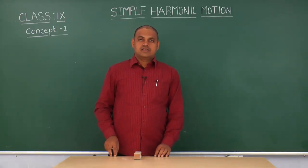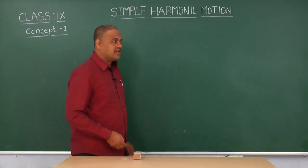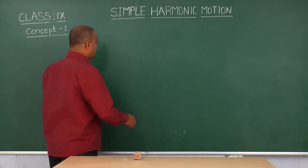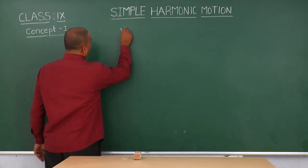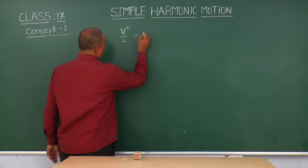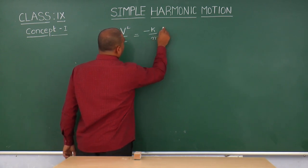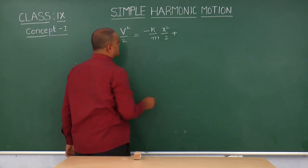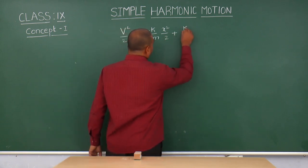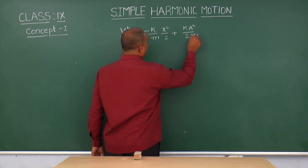Now, substituting the c-value in the velocity expression, v square by 2 is equal to minus k by m into x square by 2 plus the integration constant k into a square by 2m.